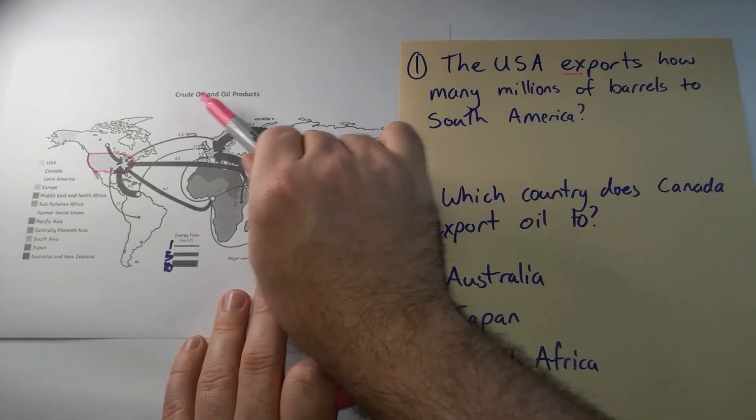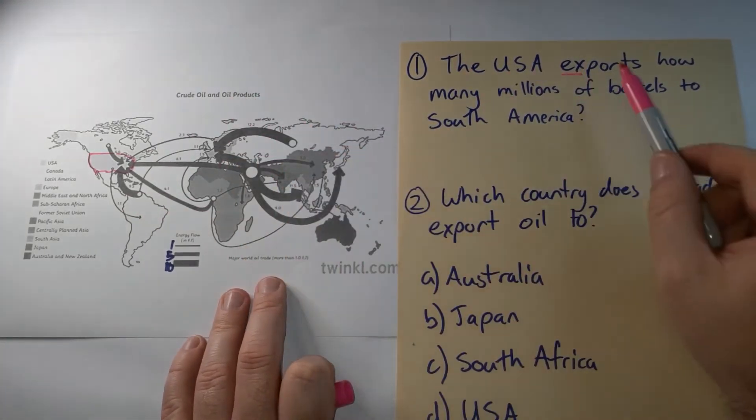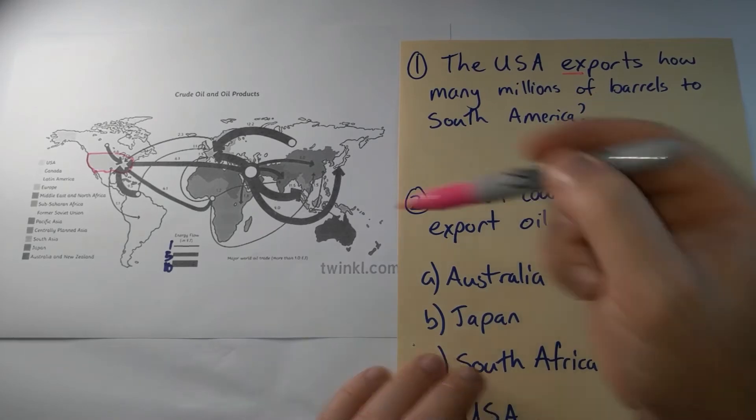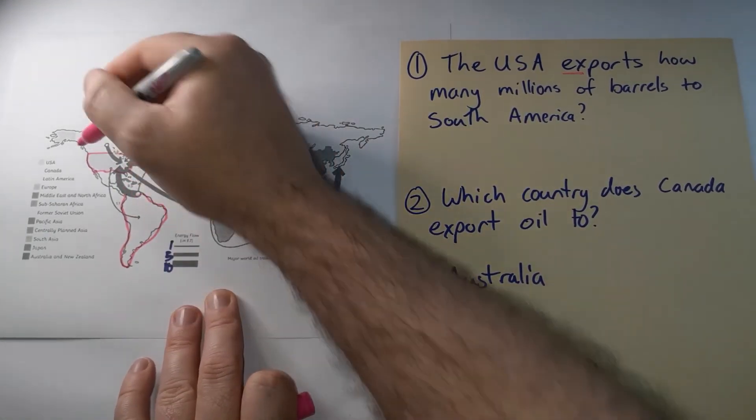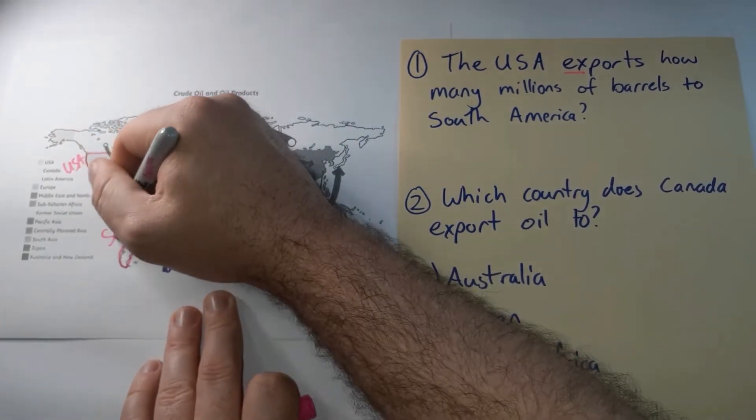This map is about oil products moving around the world and we're looking for South America as the other location. So we've got the USA, yeah, and South America.